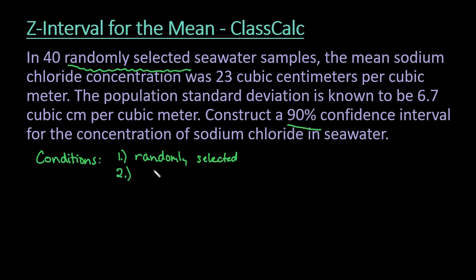The second condition is one of two things has to be met. Either your sample size has to be greater than or equal to 30, or it has to be normally distributed. If we look through here, we can see that our sample size is 40, and so we do have the first condition met. Our sample size is greater than or equal to 30 since n is 40. So that condition is met.